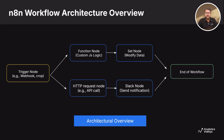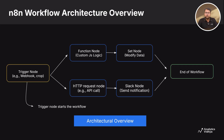Let's say you want to get a Slack notification whenever someone fills a Google Form. Here is how your workflow will look: a trigger node — a webhook which connects to Google Form; then a set node that formats the name or adds a timestamp; then an optional function node to check whether they submitted a valid email; then a Slack node which sends a message like 'new response received.' It's like building with Lego blocks — only here the outcome is a smart workflow that saves you time.